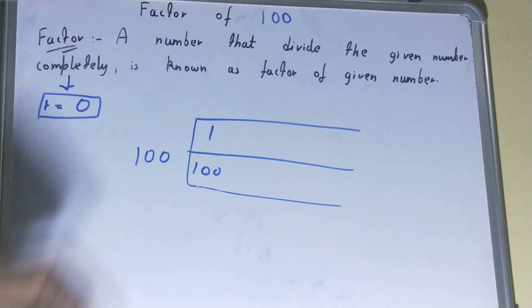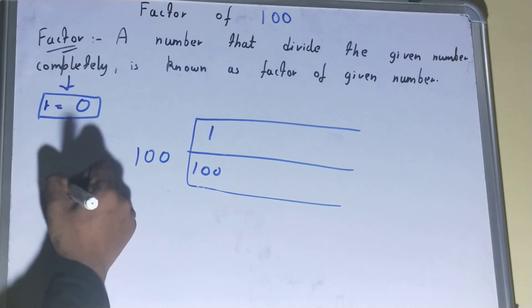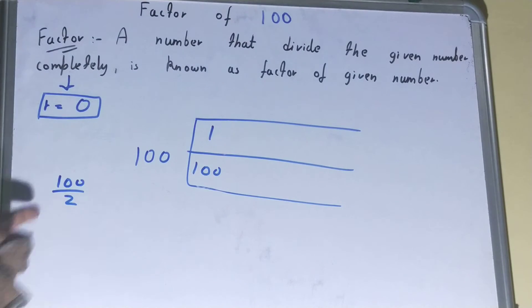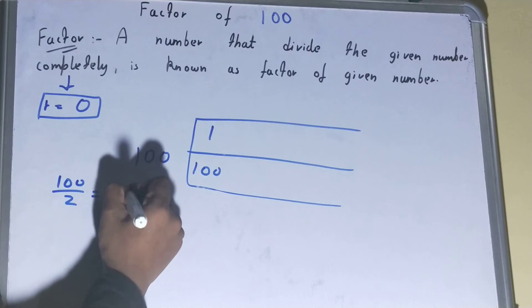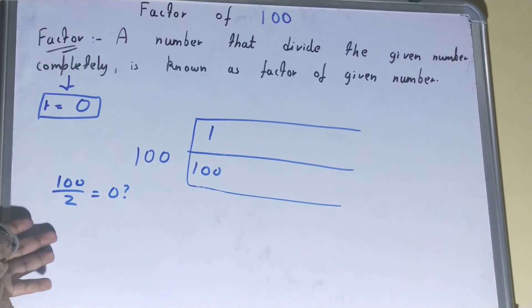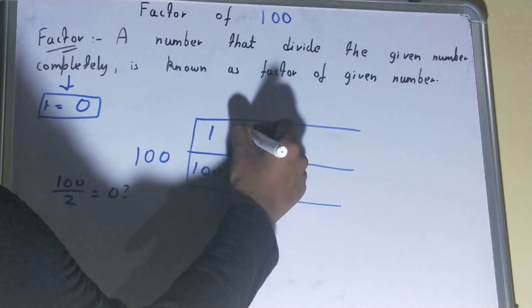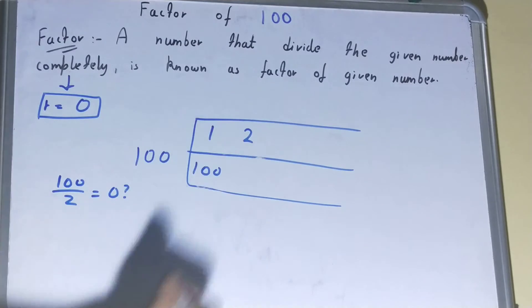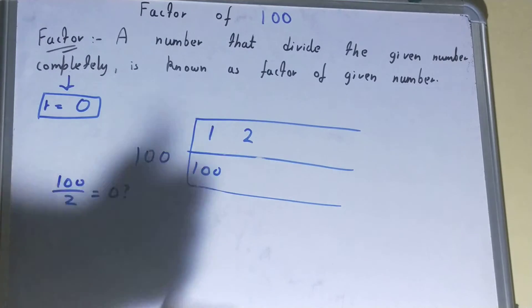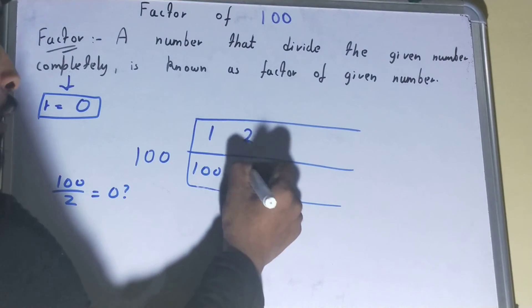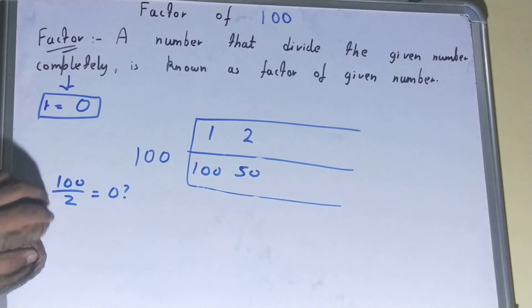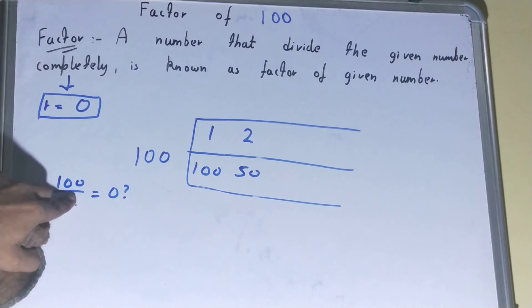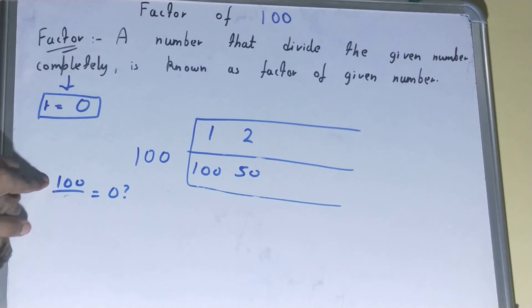Next, let's try 2. Does 100 divided by 2 give remainder zero? Yes, so 2 is a factor. And 2 multiplied by 50 equals 100, so 50 is also a factor.